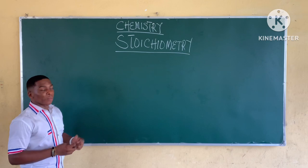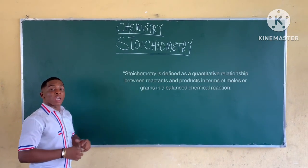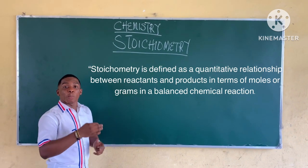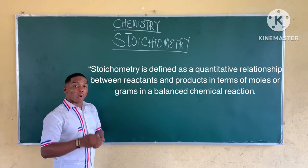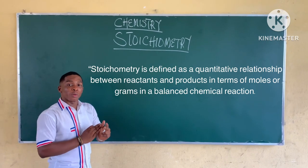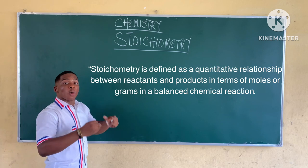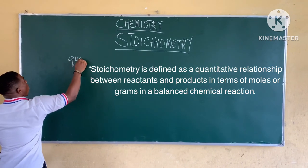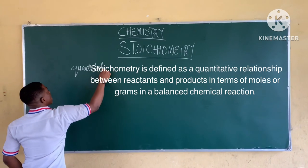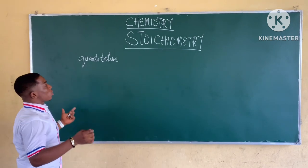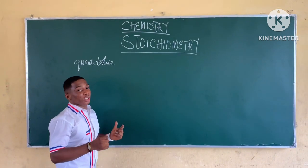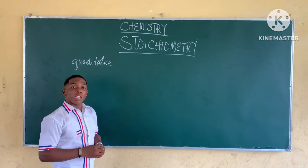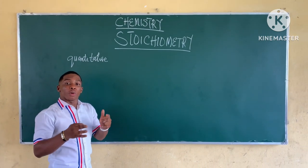What is stoichiometry? Stoichiometry is defined as a quantitative relationship between reactants and products in terms of moles or grams in a balanced chemical reaction. So the first thing we are looking at in stoichiometry is that it is quantitative.